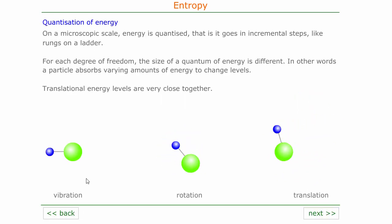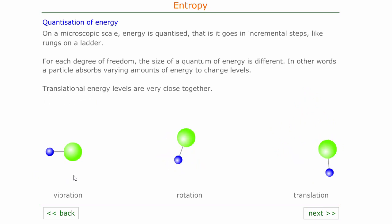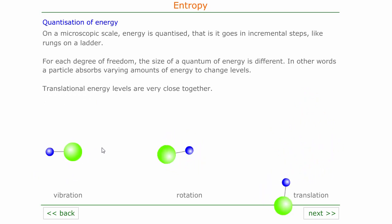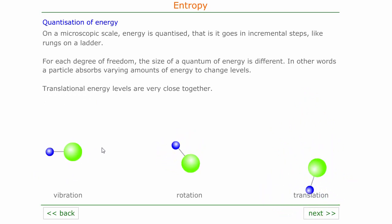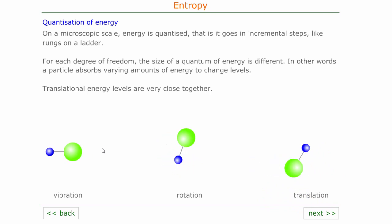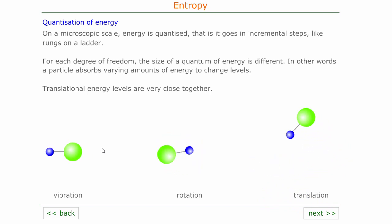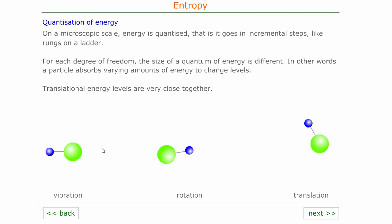Energy is delivered to particles in a quantized manner — that means in small packets which we call quanta. Each packet is called a quantum of energy, and these are very, very small amounts of energy.